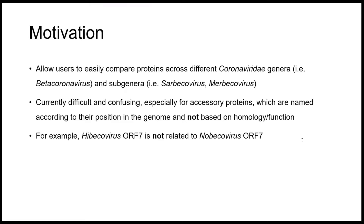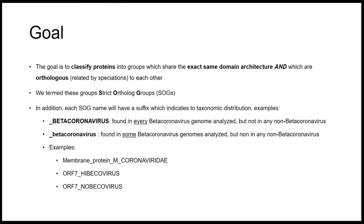Currently it's difficult and confusing, especially for the accessory proteins, to compare them because they are named according to their position in the genome and not based on homology and function. For example, Sarbecovirus ORF7 is not related to Merbecovirus ORF7 — they may be in the same position but they are not related in function or sequence similarity. This naming is very confusing because it sounds like it's the same thing but it's not.